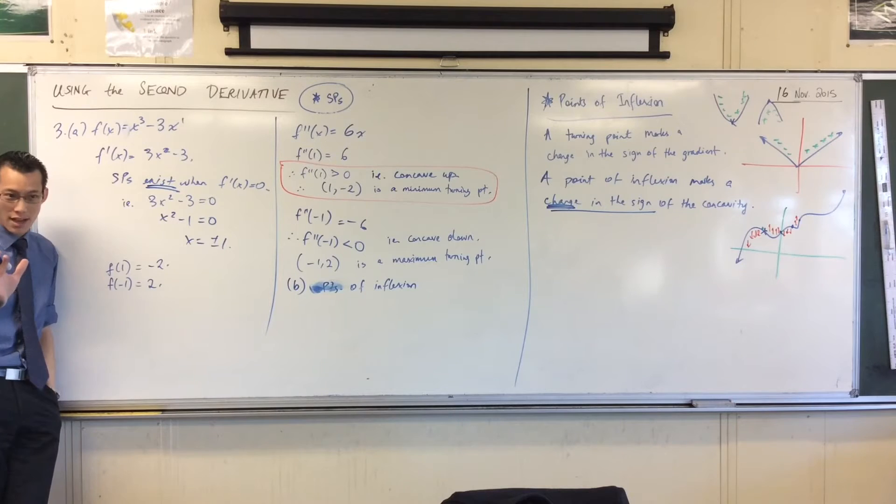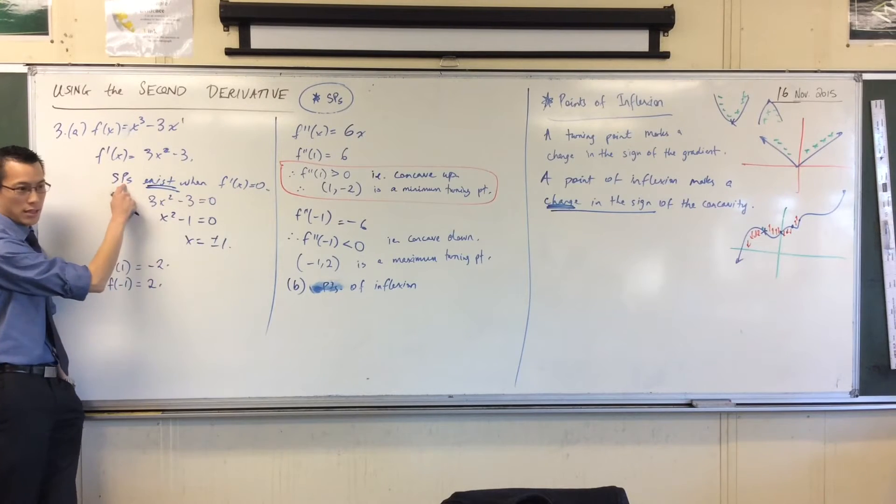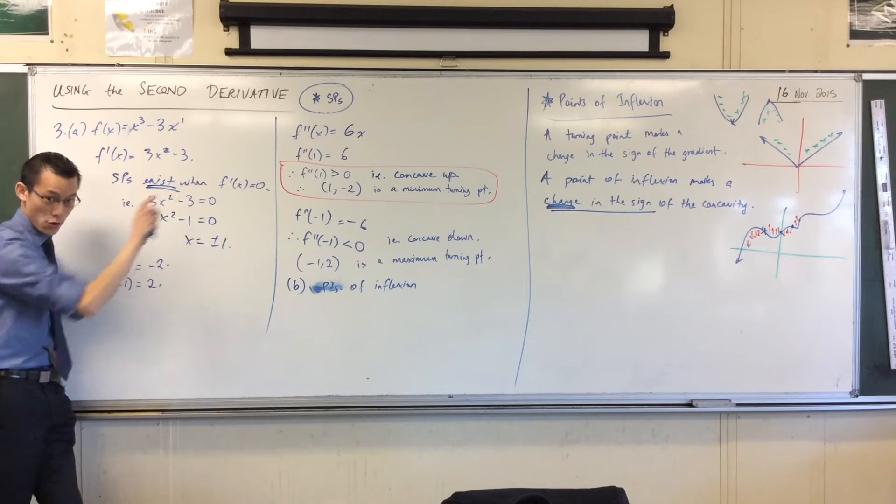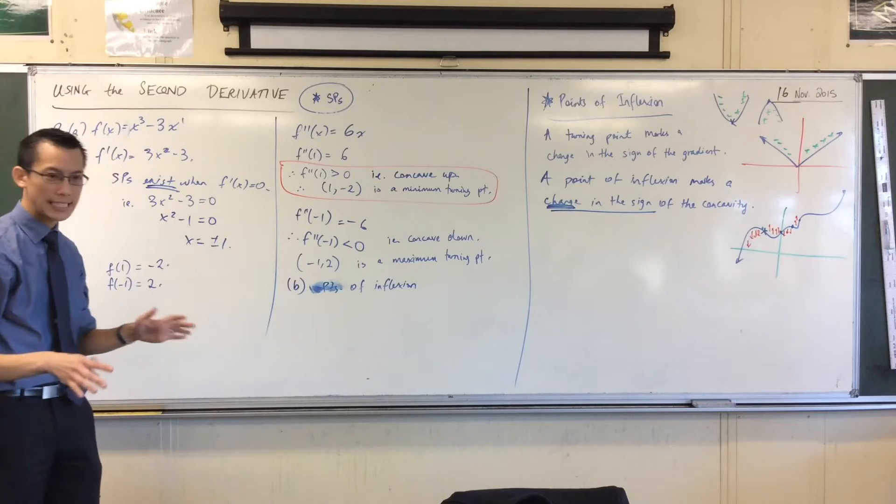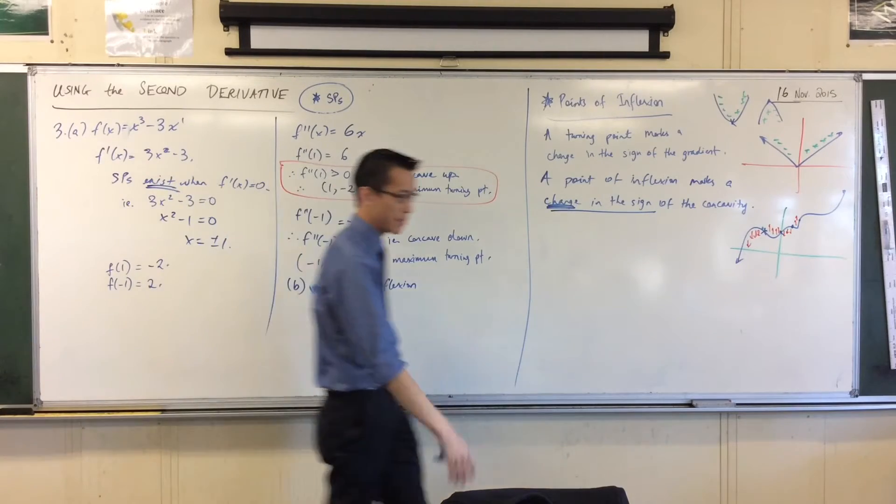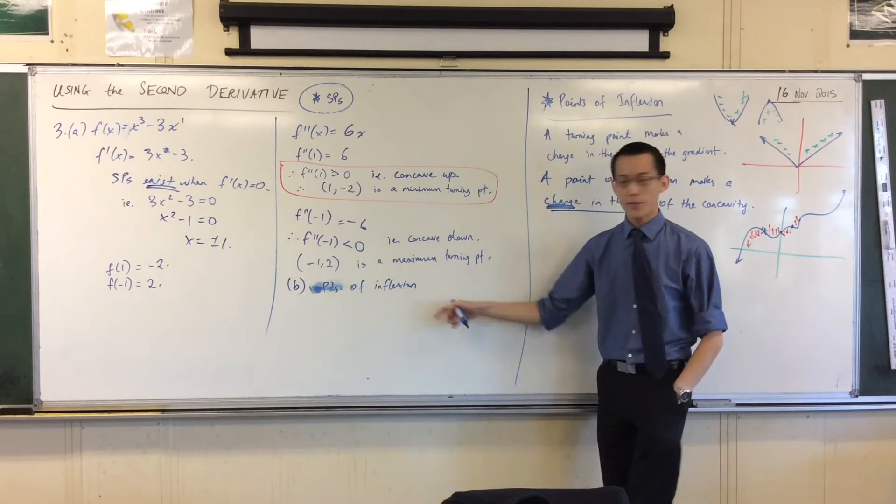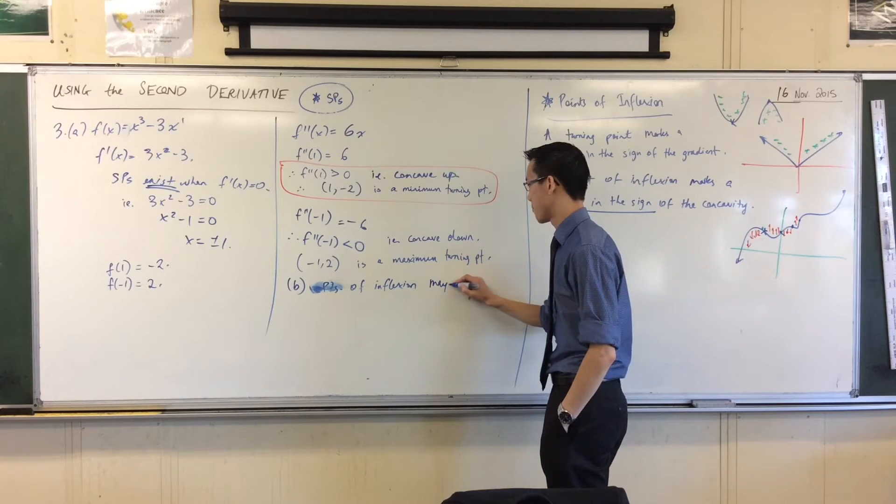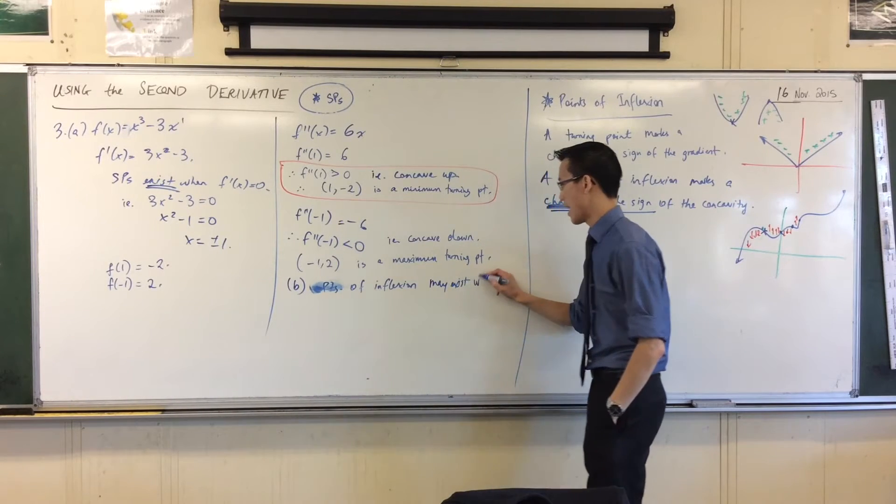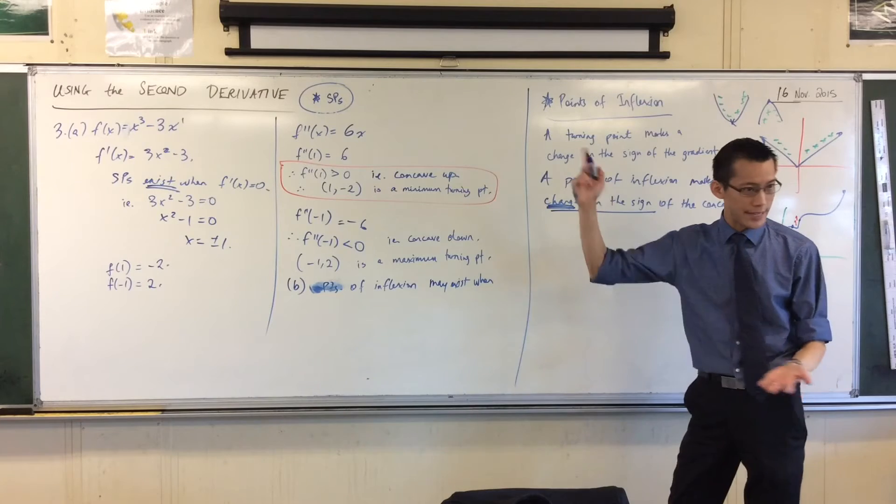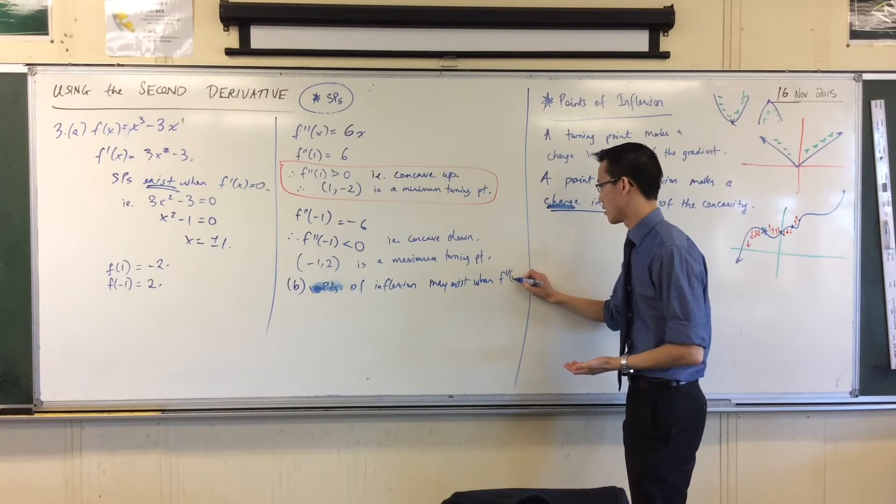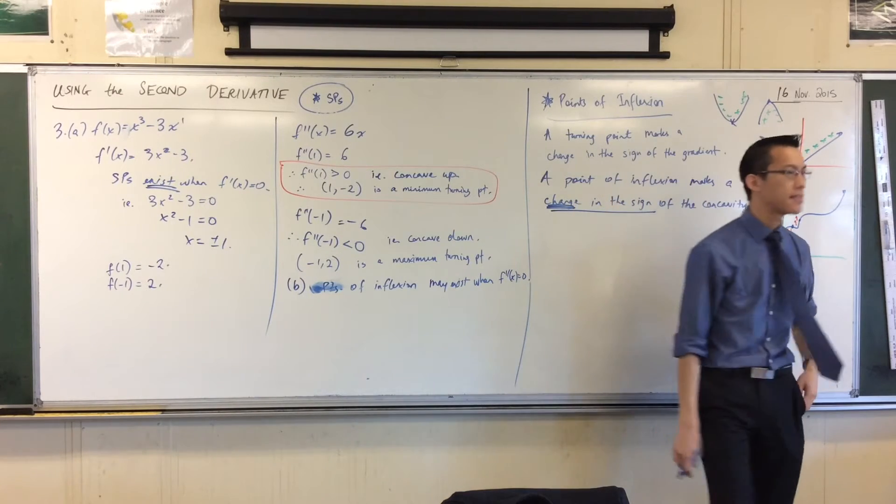Every time. If you've got this, you've got this. But remember, last time I was trying to point out, not always. I'm going to give you some counterexamples soon. I'm going to say points of inflection may exist when the second derivative f'' is equal to zero. They may exist.